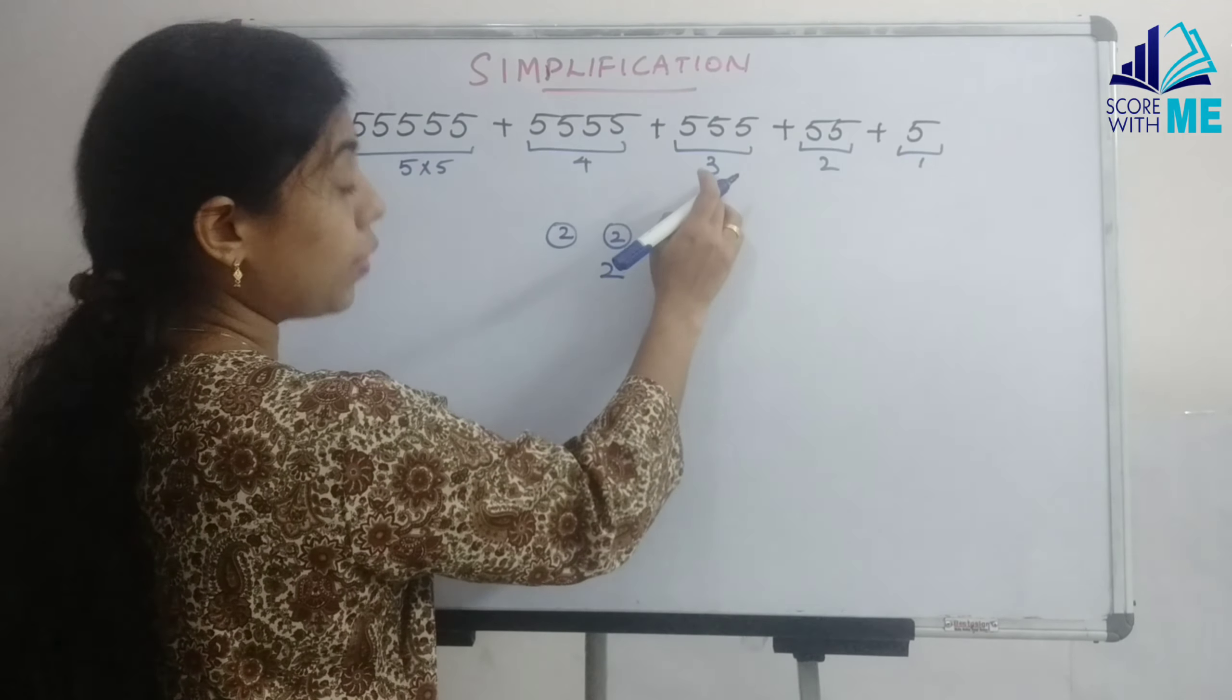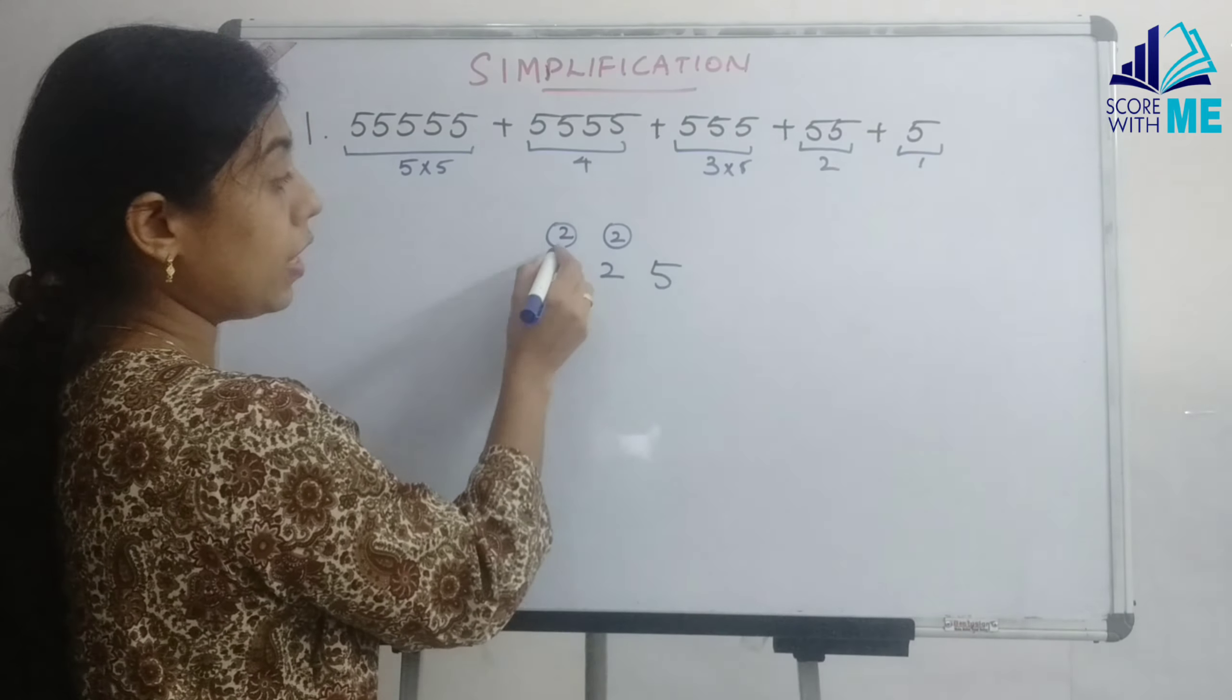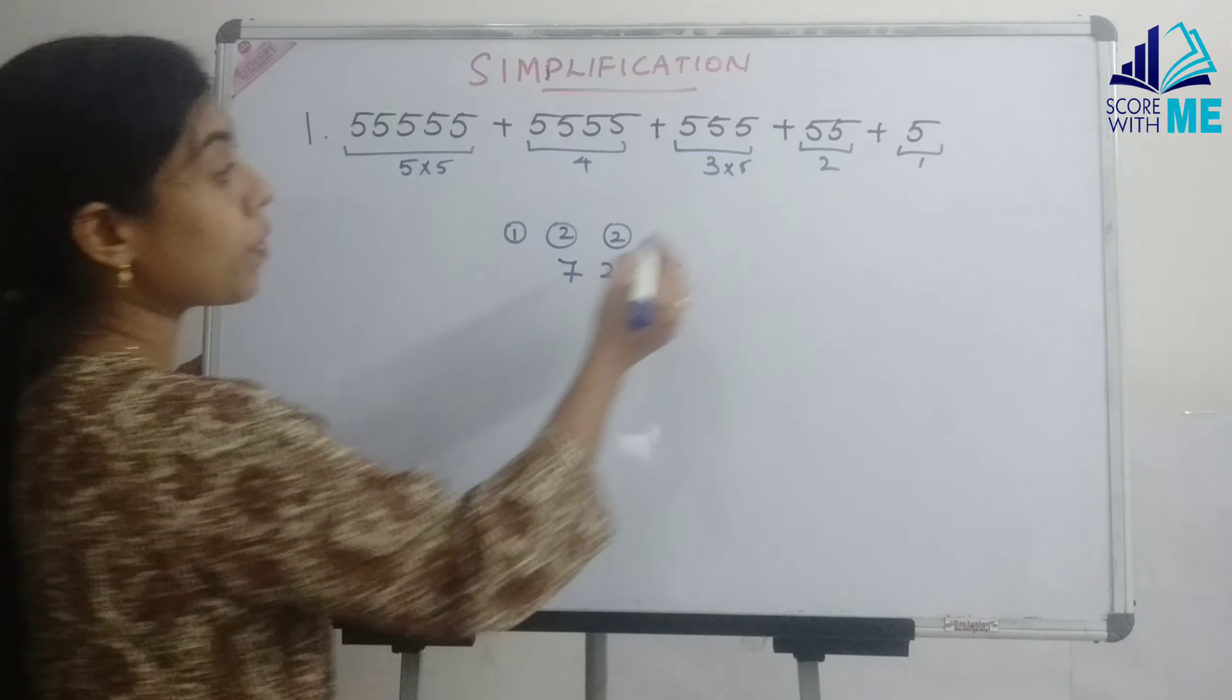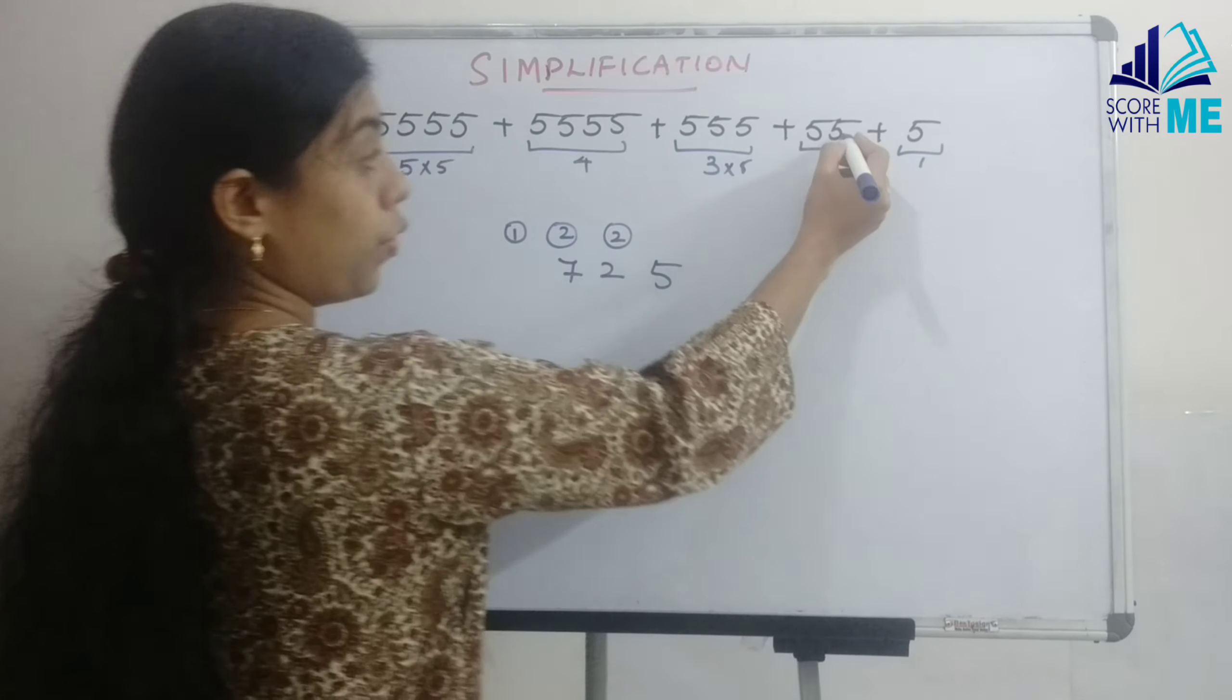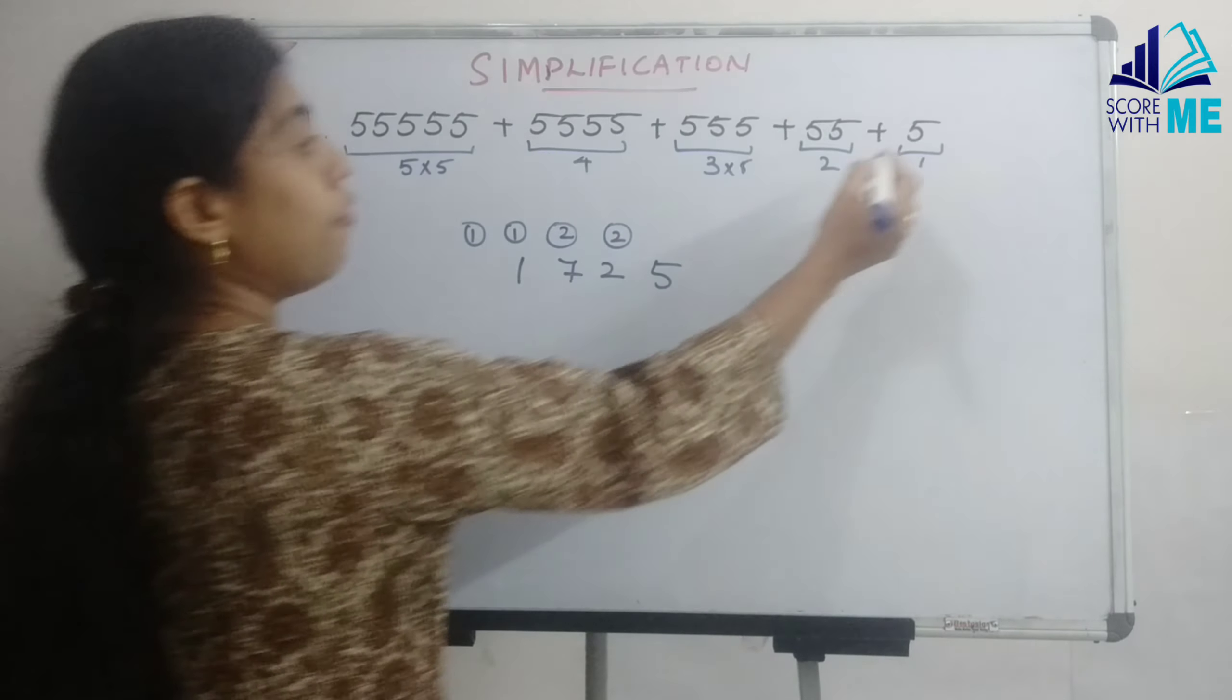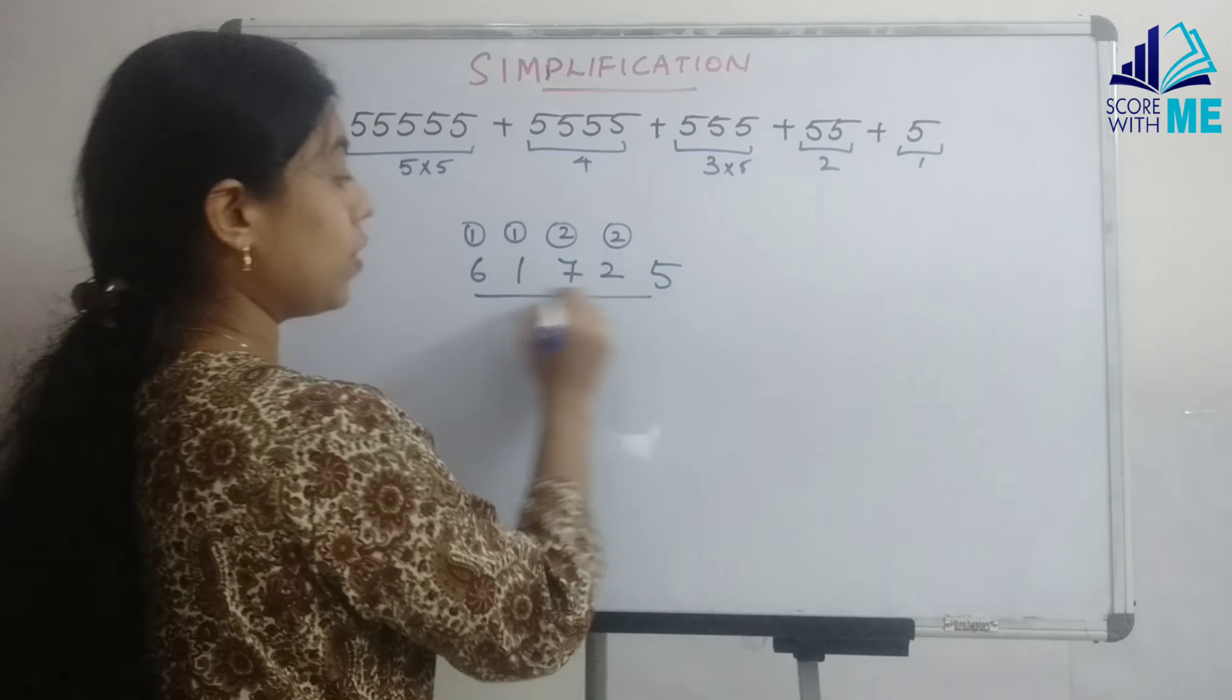Here we have 3 number of 5s and 3 into 5 will give you 15. Already a 2, so 7, carry 1. 2 into 5 will give you 10. You have a 1 carry, so that becomes 11. 5 into 1 is 5. You have a carry, so the answer for this question is 61725.